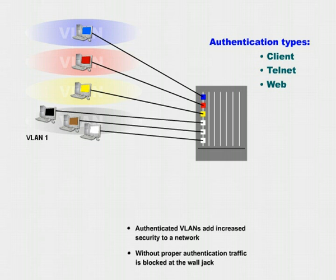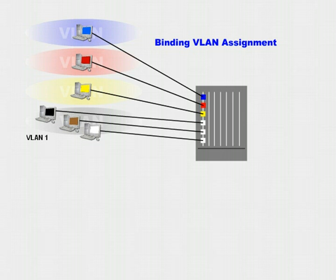A binding VLAN requires end stations to meet a combination of rules, known as binding rules, before enrollment into the VLAN is allowed. Failure to meet any one of the parameters of the rule declines enrollment into the VLAN, effectively locking the user out of the network.